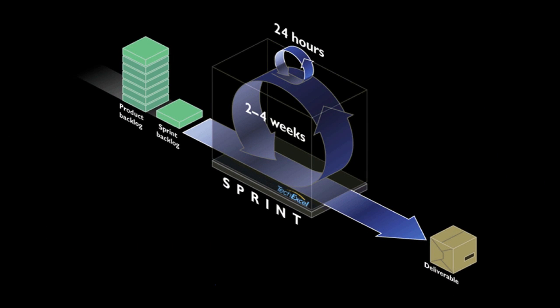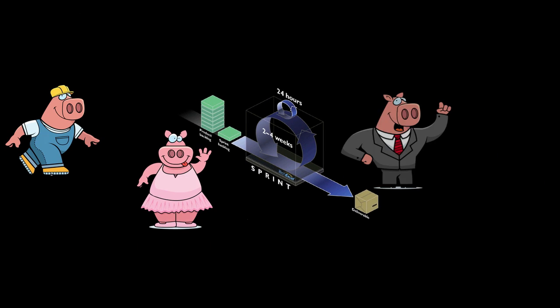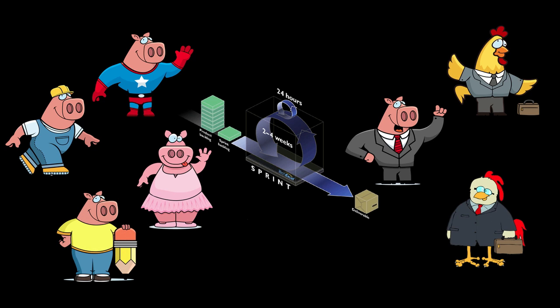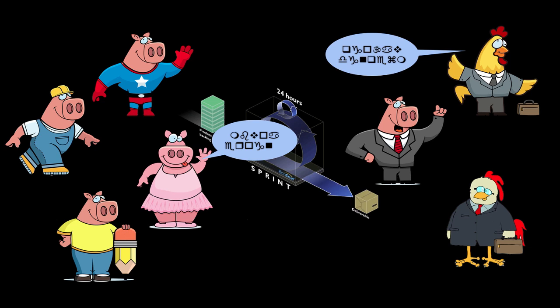The second meeting is the sprint review. This is where we go over what was accomplished with the stakeholders and product owners to make sure we're on the right track. The main purpose of this meeting is to get feedback and improve the product.